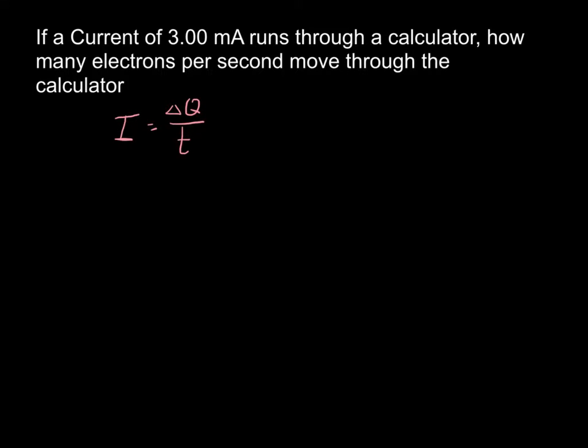And so let's say that we have three milliamps, so that's 3.00 times 10 to the negative third amps is equal to Q over T, our charge per second. And that's going to be in units of coulombs per second. We're looking for something that's in units of electrons per second. So how do I get from coulombs to electrons? Well, I know that one electron carries a charge of negative 1.60 times 10 to the negative 19th coulombs.